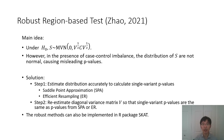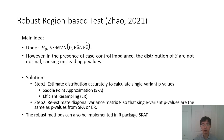We address this issue through two steps. In the first step, we try to estimate the distribution accurately to calculate the single-variant p-values in this region through two approaches: the first is called saddlepoint approximation, known as SPA, and the other is called efficient resampling. In step two, we re-estimate the diagonal variance matrix so that the single-variant p-values are exactly the same as p-values from SPA or efficient resampling, after which we can estimate the p-value of this region accurately. These robust methods can also be implemented in our package SKAT.